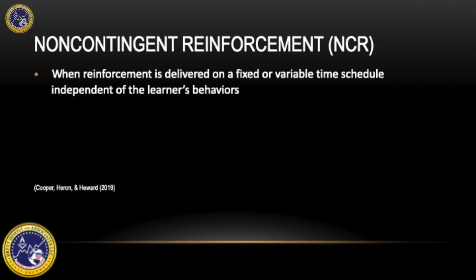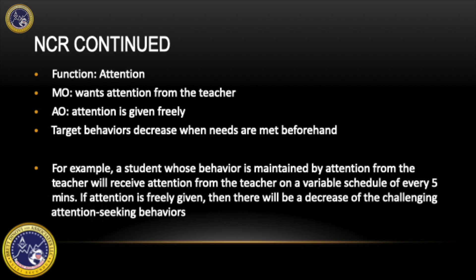The final antecedent intervention I will discuss is non-contingent reinforcement. This is when reinforcement is delivered on a fixed or variable time schedule independent of the learner's behavior. The individual receiving reinforcement freely functions as an abolishing operation, meaning it reduces the motivation to engage in behavior. For example, a student whose behavior is maintained by attention from the teacher will receive attention from the teacher on a variable schedule of every five minutes.